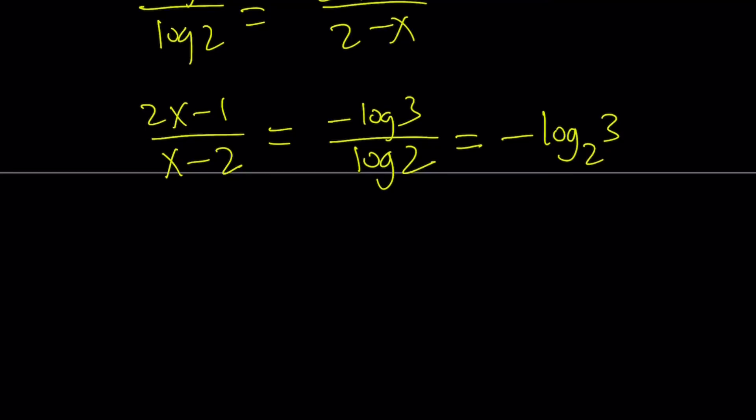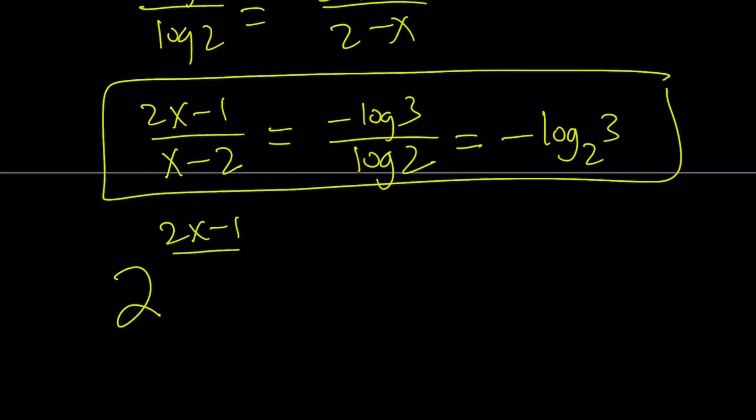So now, let's go ahead and do 2 to the power both sides. 2 to the power 2x minus 1 over x minus 2 is the same as, you can forget about this, 2 to the power negative log 3 with base 2. Okay.